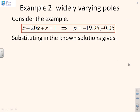Here's another example. I've got ẍ + 20ẋ + x = 1. If I solve for the poles of this system, I get these two here: p = -19.95 or -0.05. So you'll notice these poles really are very widely spaced indeed.